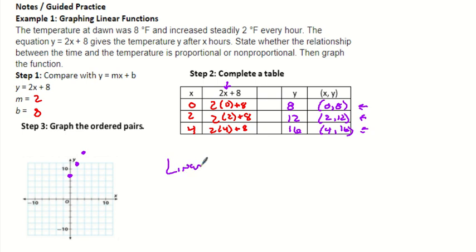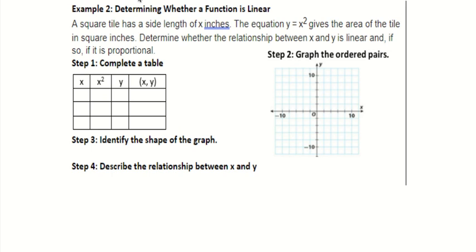This is a linear function because it is a function that makes a straight line. And we know it's also linear because it's in the format of y equals mx plus b. It is not proportional because it's not a straight line that goes through the origin.